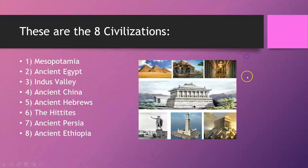Just to be clear, we are going to be learning about all eight of these civilizations — not one of them or some of them, all eight: Mesopotamia, ancient Egypt, Indus Valley, ancient China (not modern China), ancient Hebrews, the Hittites, ancient Persia, and ancient Ethiopia.